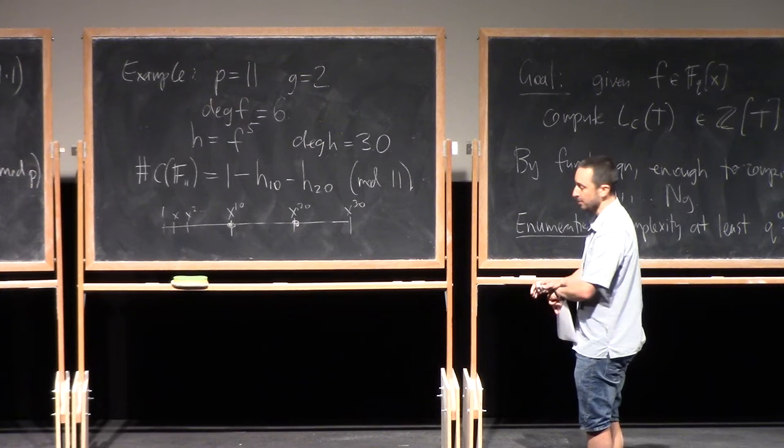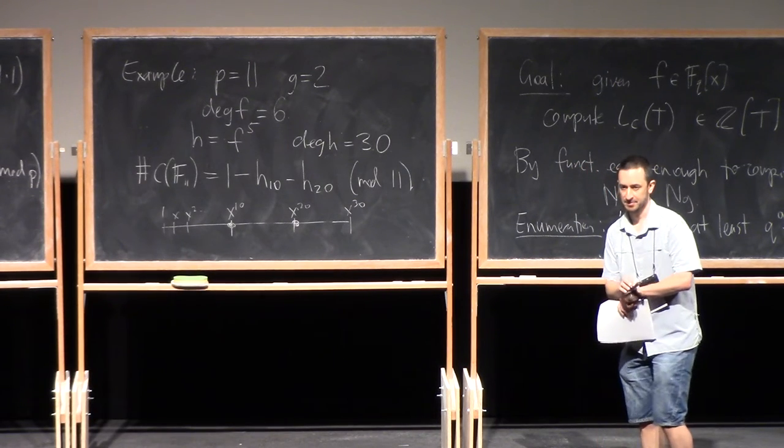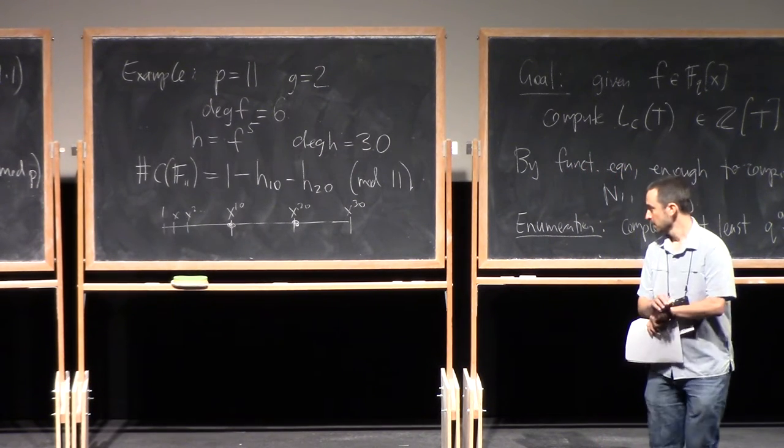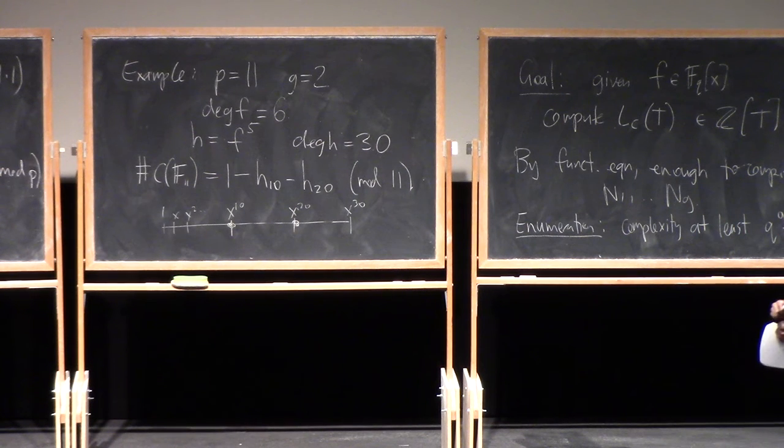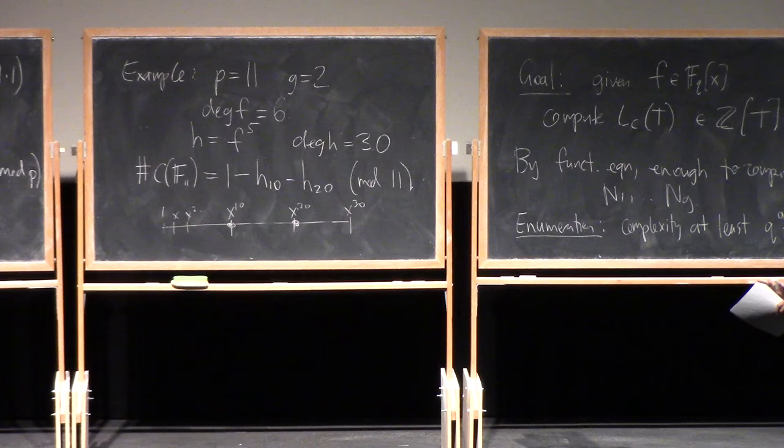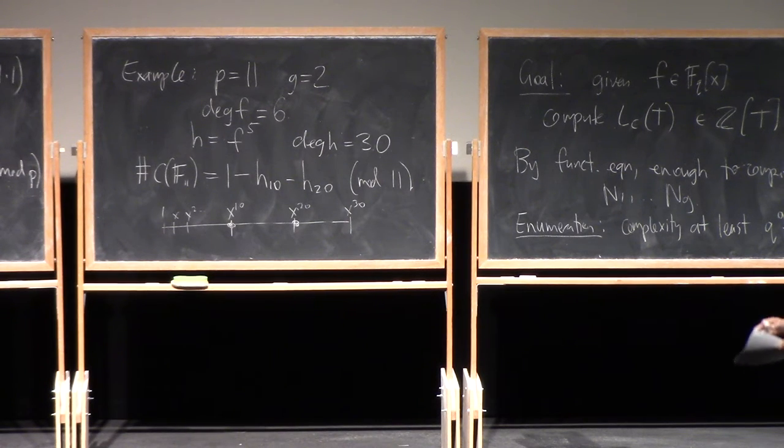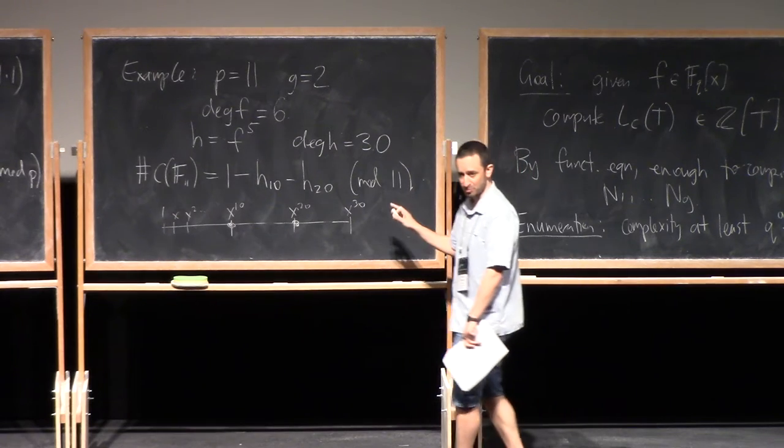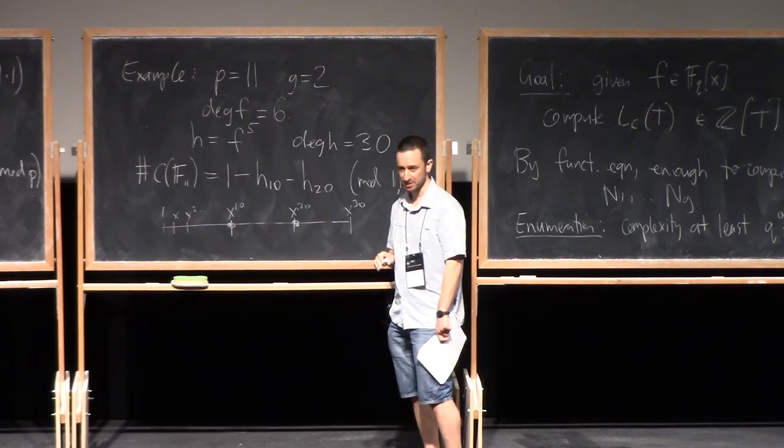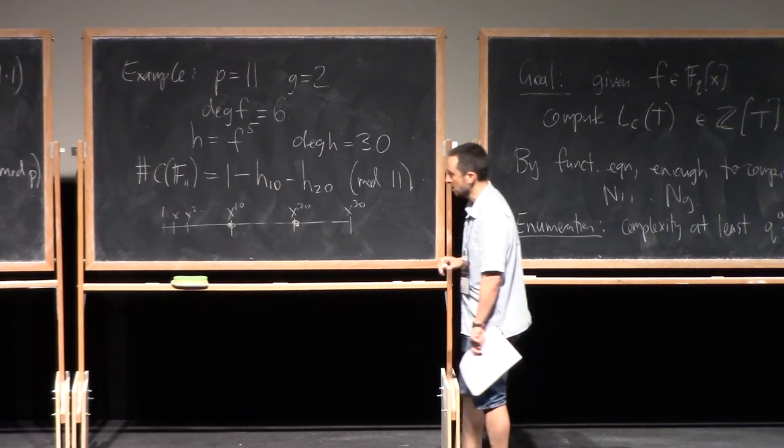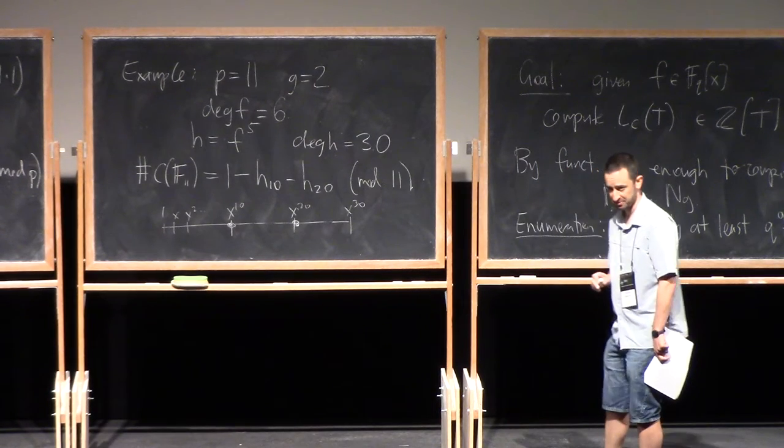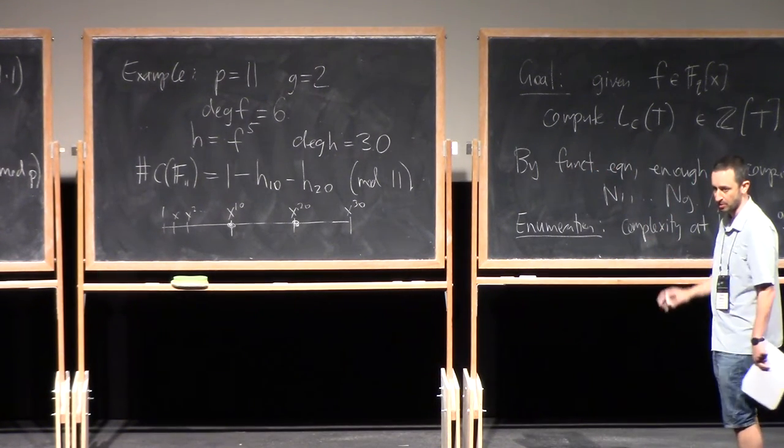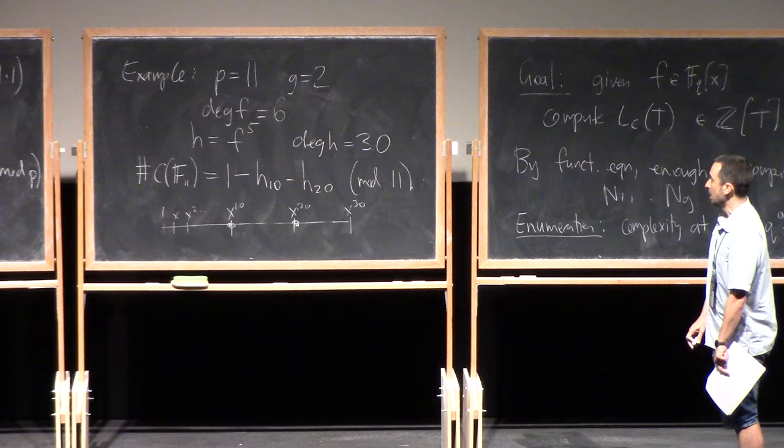Okay. Now, it's kind of annoying that we only get the answer modulo 11. Now, it might be okay because, remember, the Hasse-Weil bound constrains the possible value. And it turns out if P is big enough relative to the genus, then, in fact, this tells you the exact number of points. And there's an exercise about that in the notes, and also an example where it doesn't tell you enough. If P is too small, this is not quite enough.